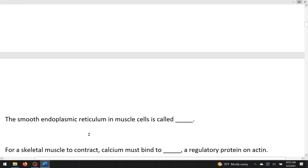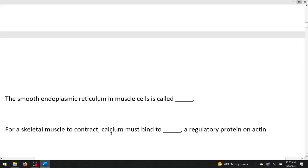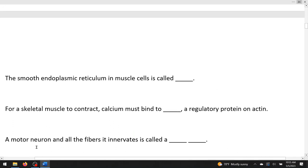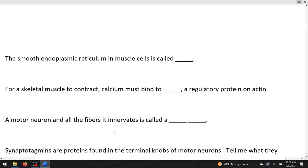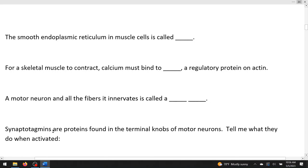The smooth endoplasmic reticulum in muscle cells. Remember you can talk about the endoplasmic reticulum being the ER. So in muscle cells it's simply called the SR or the sarcoplasmic reticulum. For a skeletal muscle to contract, calcium must bind to blank, a regulatory protein on actin. So this is going to be troponin. A motor neuron and all the fibers it innervates is called a single motor unit. Synaptotagmins are proteins found in the terminal knobs of motor neurons. In fact, tell me what they do when activated. Well when they're activated they allow vesculation of acetylcholine or they can put ACH, a neurotransmitter, into a vesicle.